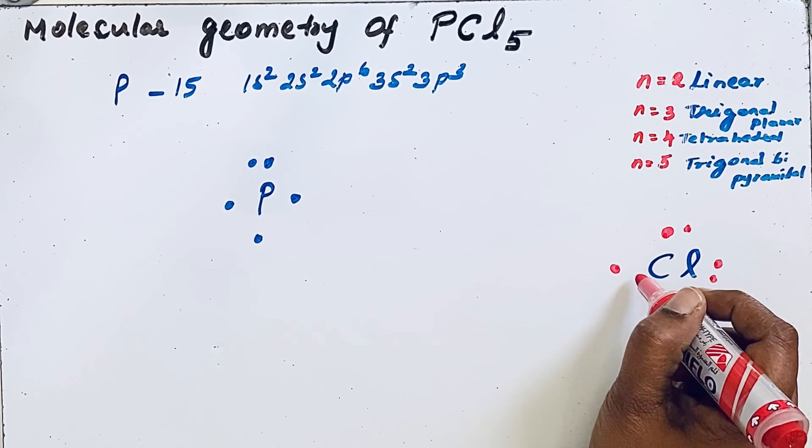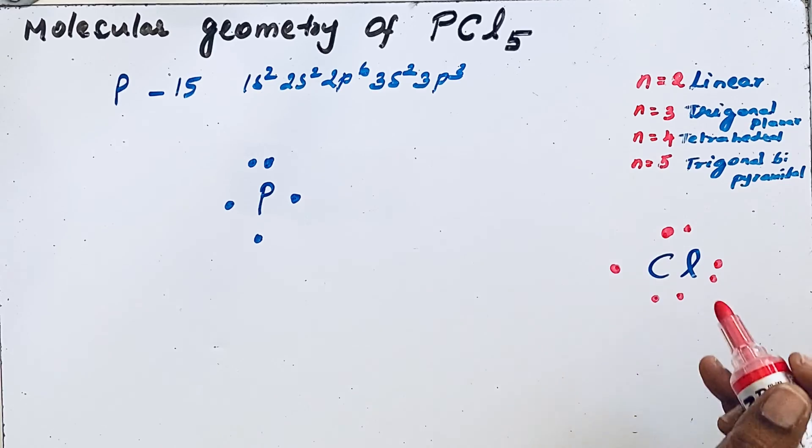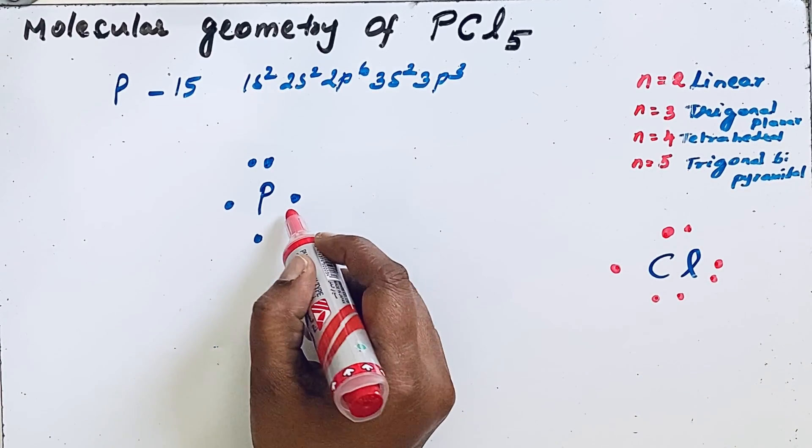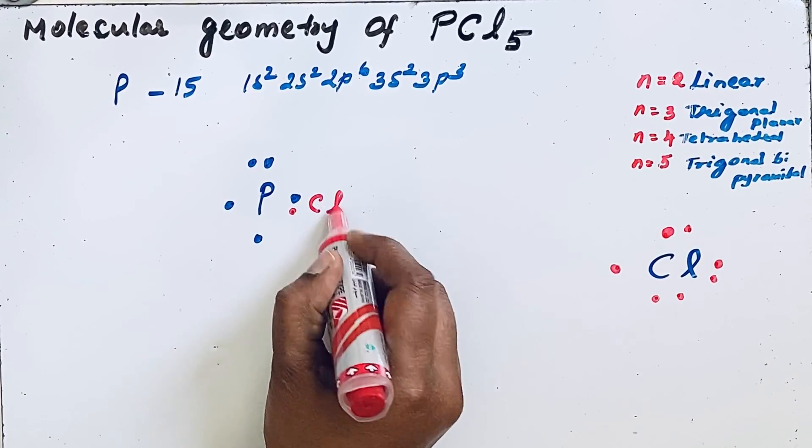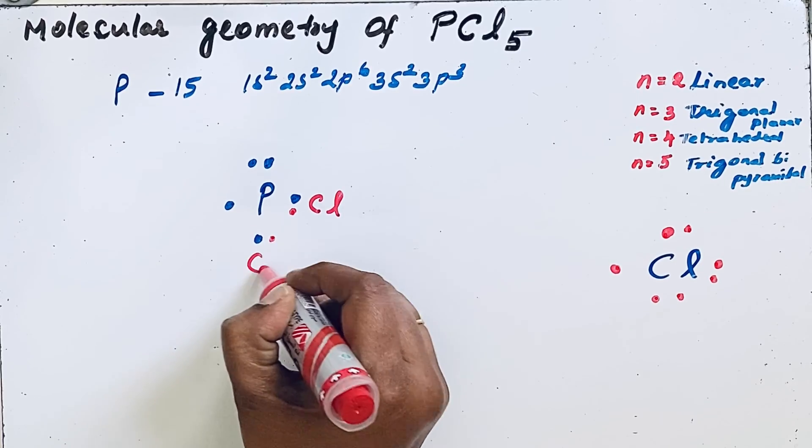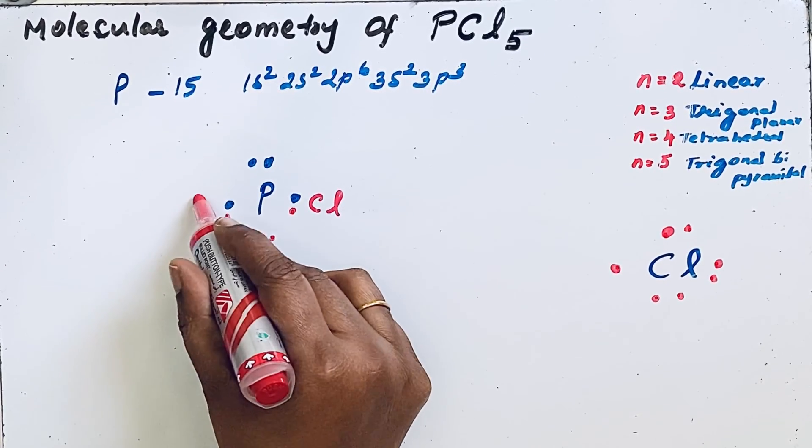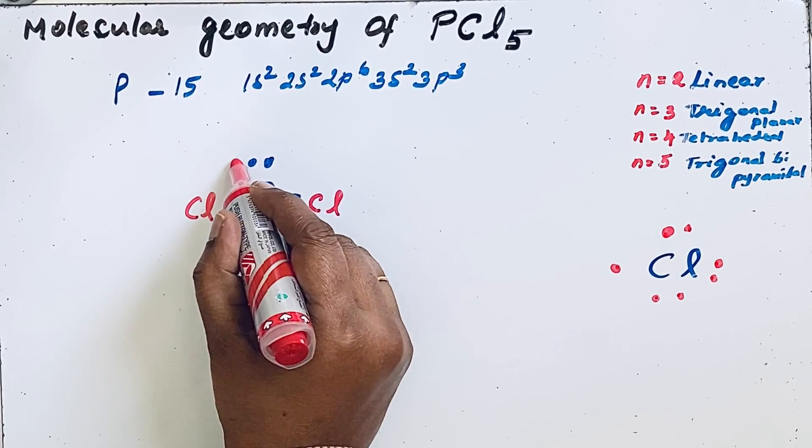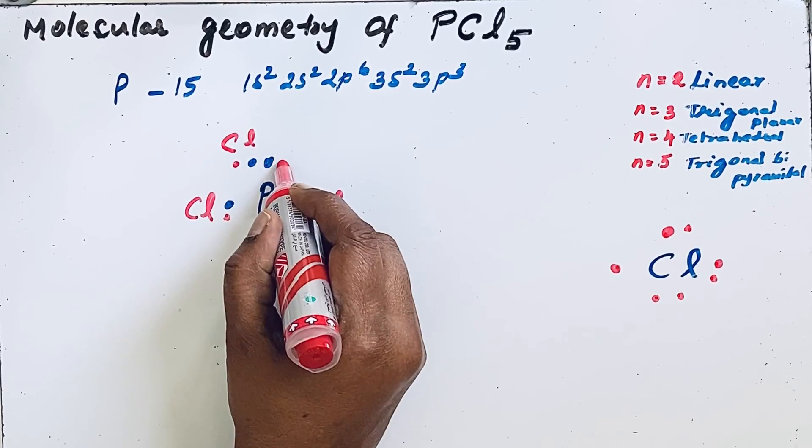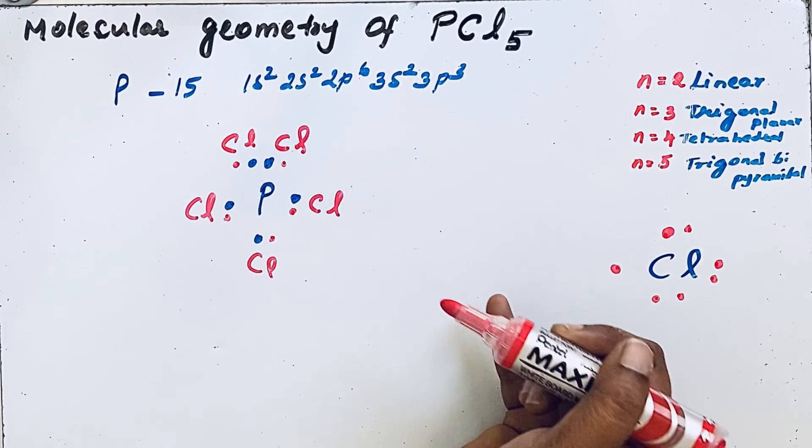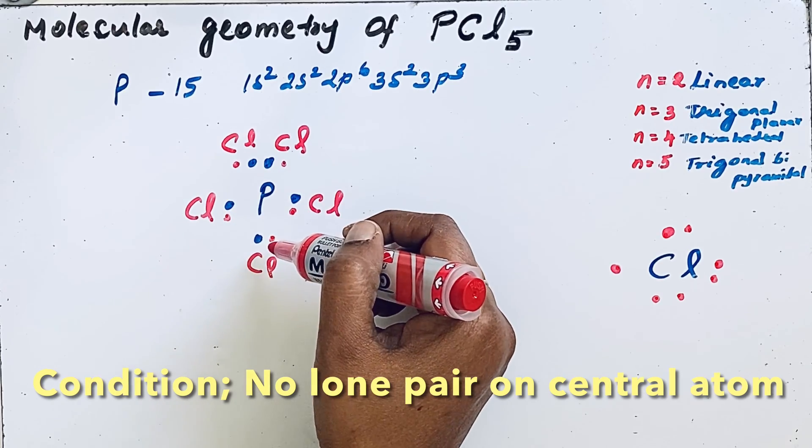That one electron tries to make a bond with phosphorus. So we have one chlorine here, another chlorine, a third chlorine, fourth chlorine, and fifth chlorine. In PCl5 molecule we have five bond pairs.